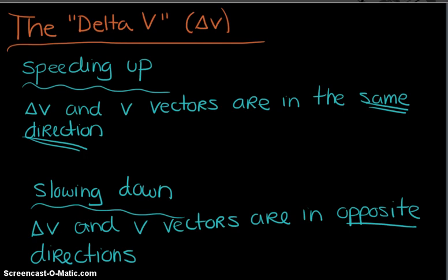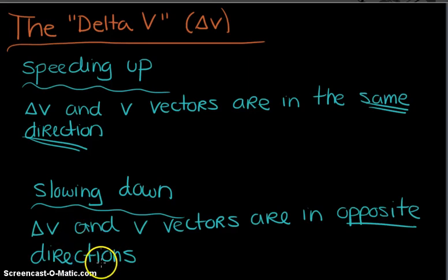To recap: there's a pattern between Delta V and V that determines whether an object speeds up or slows down. Speeding up occurs when Delta V and V vectors are in the same direction — positive V and positive Delta V means speeding up; negative V and negative Delta V also means speeding up. Slowing down occurs when Delta V and V vectors are in opposite directions — positive V with negative Delta V means slowing down, and negative V with positive Delta V also means slowing down. We'll talk more about this tomorrow. I hope you found this helpful — if you have any questions let me know, and have a great day!